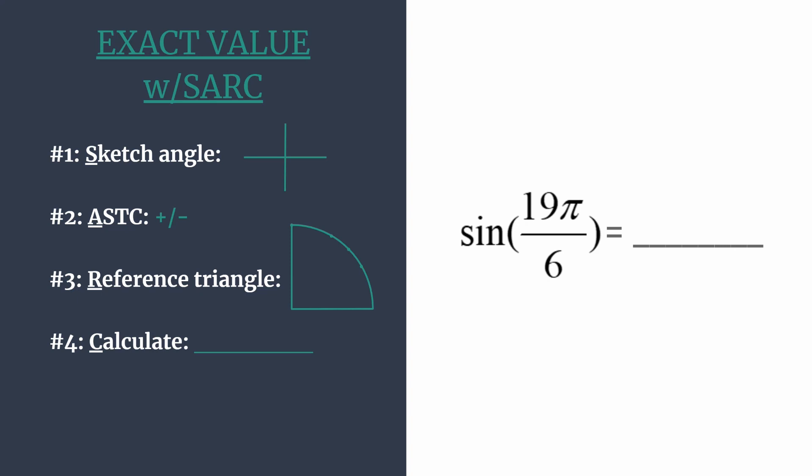So all you have to do to find that coterminal angle is subtract 2π from 19π over 6. And make sure you write 2π with the common denominator of 6, so that'd be 12π over 6.